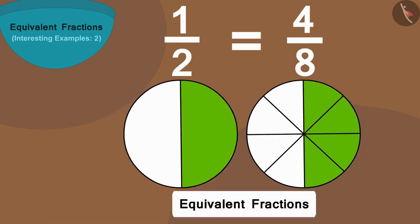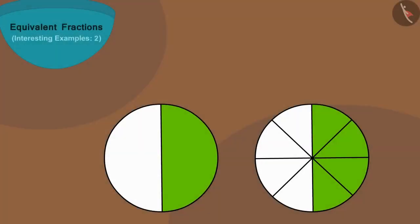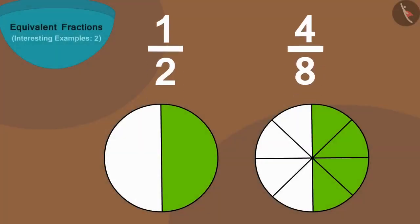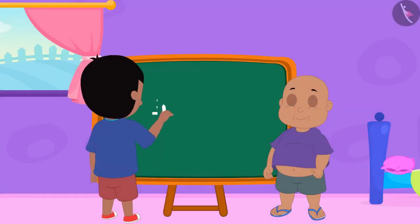Therefore we will color in four parts of this circle. In this way we have the numeral above our equivalent fraction as four. In this way, one half is equal to four eighths.